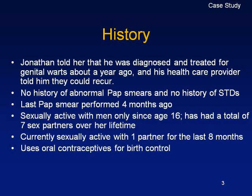She has been sexually active with men only since age 16, and has had a total of seven sex partners over her lifetime — another important factor for sexually transmitted diseases. She is currently sexually active with one partner for the last eight months, and uses oral contraceptives for birth control. Importantly, oral contraceptives provide no physical barrier, so she can still acquire these viruses and bacteria via sexual contact.